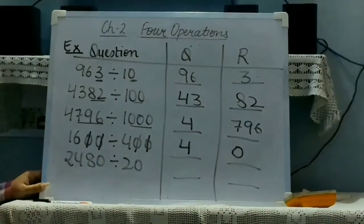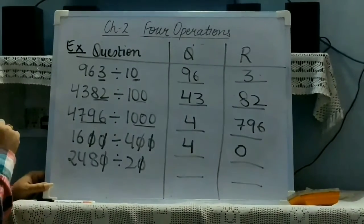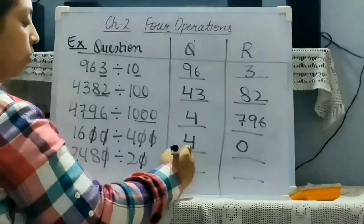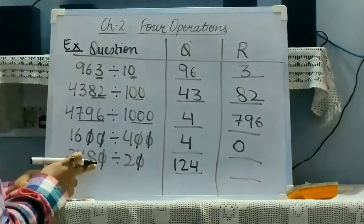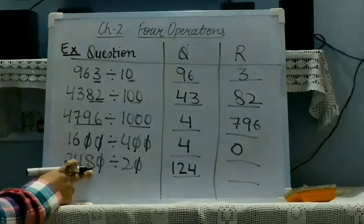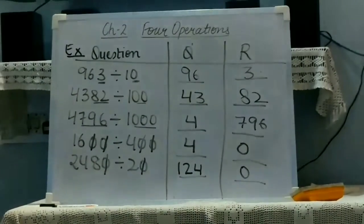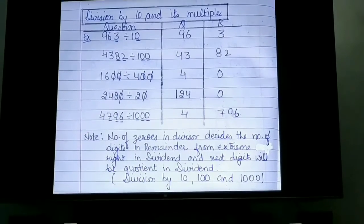Now, 1 zero will be cancelled with 1, now start dividing 248 by 2. 2 ones are 2, 2 twos are 4, 2 fours are 8. It has been divided completely, so the remainder will be 0.